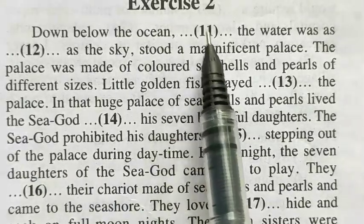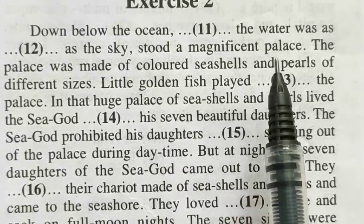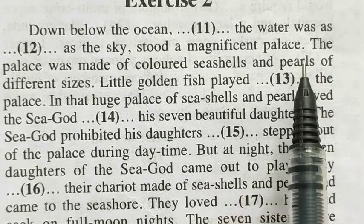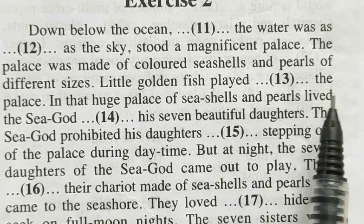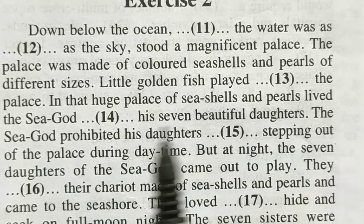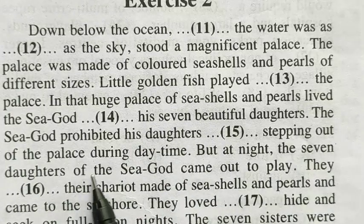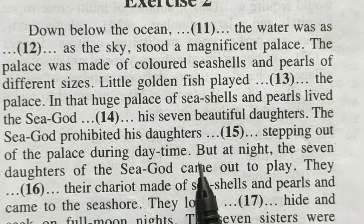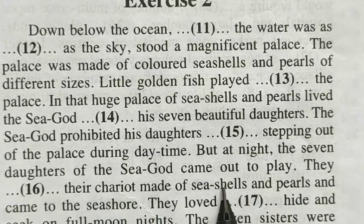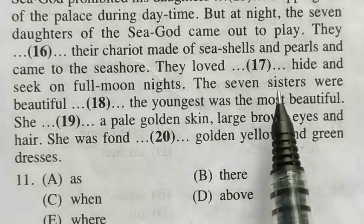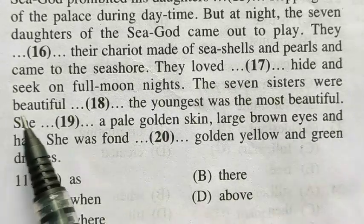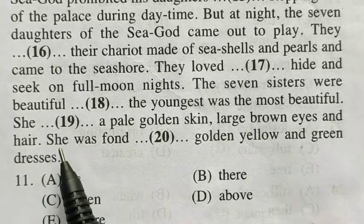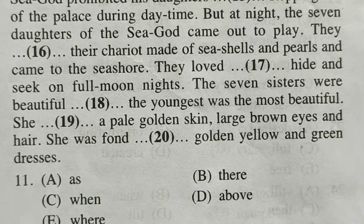Now let's read the whole paragraph. Down below the ocean where the water was as blue as the sky stood a magnificent palace. The palace was made of colored seashells and pearls of different sizes. Little golden fish played around the palace. In that huge palace of seashells and pearls lived the sea god with his seven beautiful daughters. The sea god prohibited his daughters from stepping out of the palace during daytime, but at night the seven daughters of the sea god came out to play. They drove their chariot made of seashells and pearls and came to the seashore. They loved playing hide and seek on full moon nights. The seven sisters were beautiful but the youngest was the most beautiful. She had a pale golden skin, large brown eyes and hair. She was fond of golden yellow and green dresses. We are done with exercise number 2.